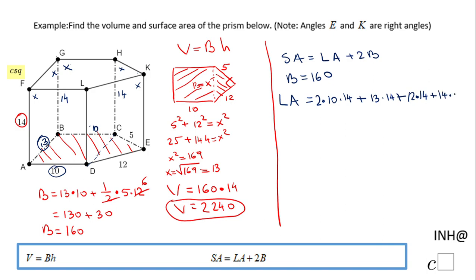All these faces are rectangles, so now we just need to simplify the expression. Two times 10 times 14 gives 280. Then 13 times 14 is 182. Then 12 times 14 is 168, and 14 times 5 is 70. So the lateral area will be here...